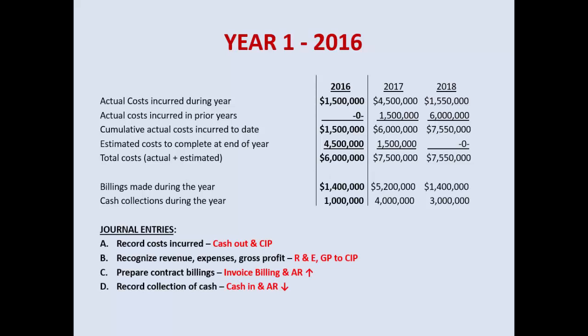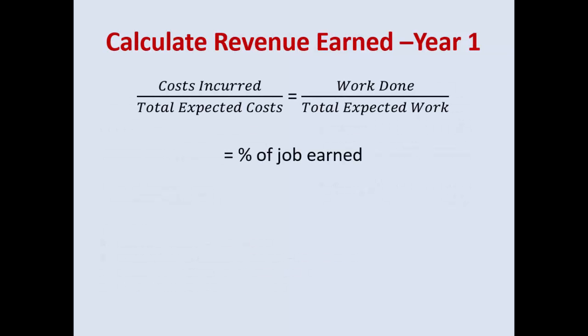In the example, actual cost incurred in year one is $1.5 million. Cumulative cost to date is also $1.5 million; estimated remaining cost is $4.5 million for a total of $6 million. You're given billings and cash collections — but focus on actual cost incurred for your journal entries. Record cost incurred: cash goes out as the credit, and your debit capitalizes that cost into CIP. Ignore billings and cash when calculating earned revenue; focus on work performed.